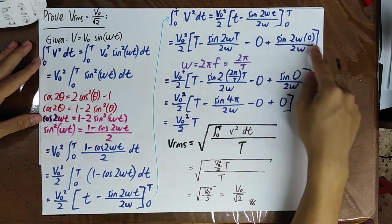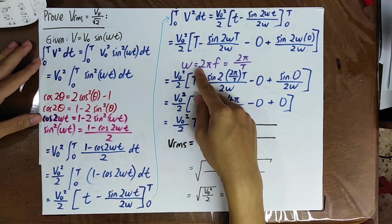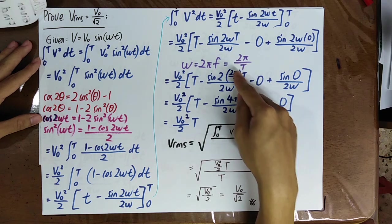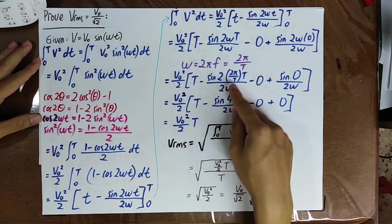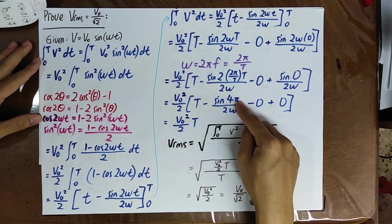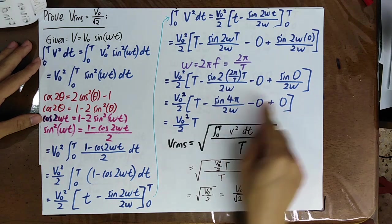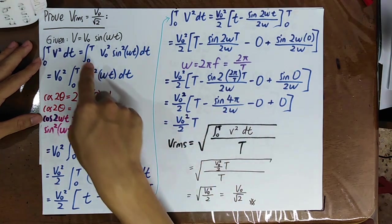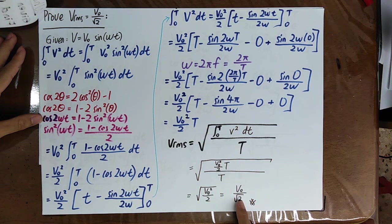Carrying out the integration and substituting ω = 2π/T, we get a term involving sin(4π). Since sin(0) = sin(2π) = sin(4π) = 0, that term vanishes. Substituting the result back into the RMS formula, we successfully prove that Vrms = V₀/√2.